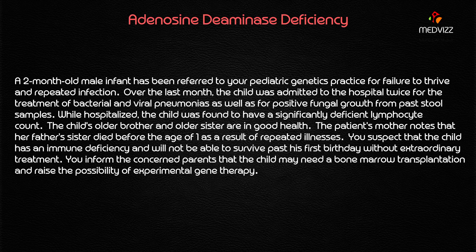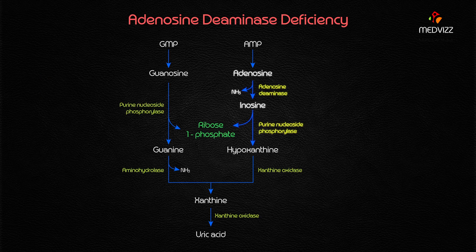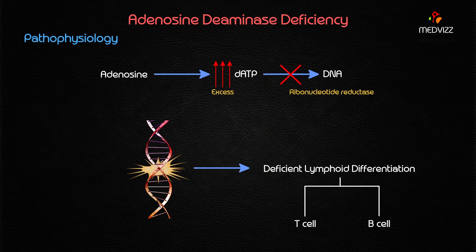Adenosine deaminase (ADA) deficiency is an autosomal recessive disorder that results in a defect of the enzyme adenosine deaminase. This enzyme is involved in converting adenosine to inosine during purine degradation. Adenosine deaminase is the enzyme responsible for this specific conversion step in the purine degradation pathway.